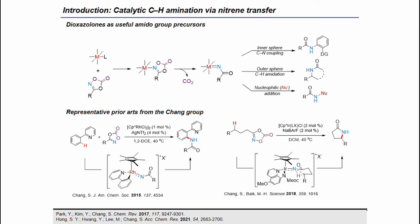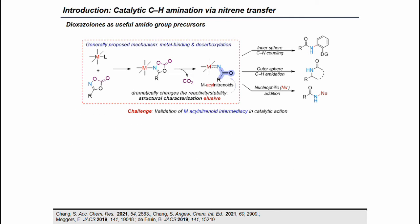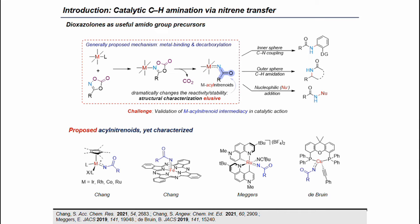In 2018, we extended the mechanistic framework to the outer-sphere-type CH insertion pathway to eventually synthesize azacyclic compounds such as gamma-lactams using iridium catalysts. In both examples, transition metal acyl nitrinoid species are postulated as the key intermediates. The generally proposed mechanism of metal acyl nitrinoid formation involves metal-dioxazolone binding and decarboxylation. However, validation of the intermediacy of metal acyl nitrinoid species in the catalytic reaction is an ongoing challenge, and none of them have been explicitly characterized.